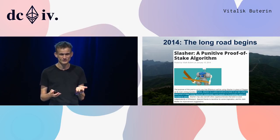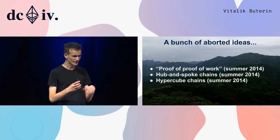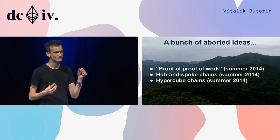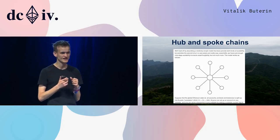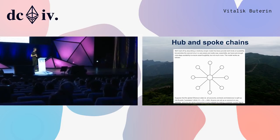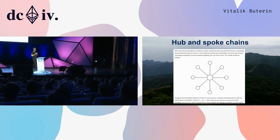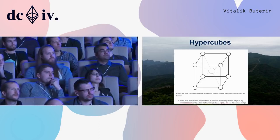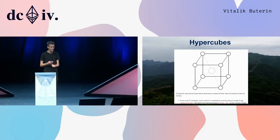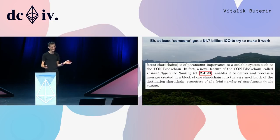At the time it was not even clear that proof of stake was the direction we were going, but as we know, over time that changed quite a lot. In 2014 we went through a bunch of interesting and aborted ideas: proof-of-proof-of-work was a suggestion to try to improve scalability; hub-and-spoke chains had one chain in the middle and a bunch on the edges — a very early scalability and sharding proposal; and hypercubes, which are basically hub-and-spoke but with 12 dimensions instead of three for even more scalability. Unfortunately that idea ended up getting abandoned, but someone else has a big ICO to make it work.